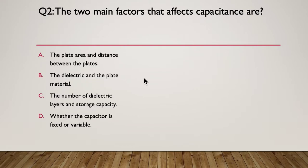Question two, the two main factors that affect capacitance are, what are they? What are the two main factors that affect capacitance? A, the plate area and the distance between the plates. B, the dielectric and the plate material. C, the number of dielectric layers and storage capacity. Or D, whether the capacitor is fixed or variable. So, there are several things that affect capacitance. What are the two main ones? So, pause here.